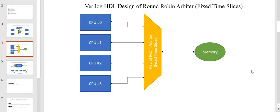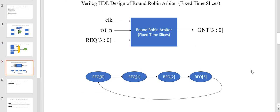For example, if all the CPUs are trying to access the memory at the same time, they will get access one by one: first CPU 0, then CPU 1, then CPU 2, and then CPU 3. One important point to note is that this arbiter implements a fixed time slice, meaning every CPU will have a predefined fixed time to access the memory. The round robin arbiter design has a clock signal, a reset signal, 4 requests, and based on the request and the round robin algorithm, it will grant access to one requester at a time.